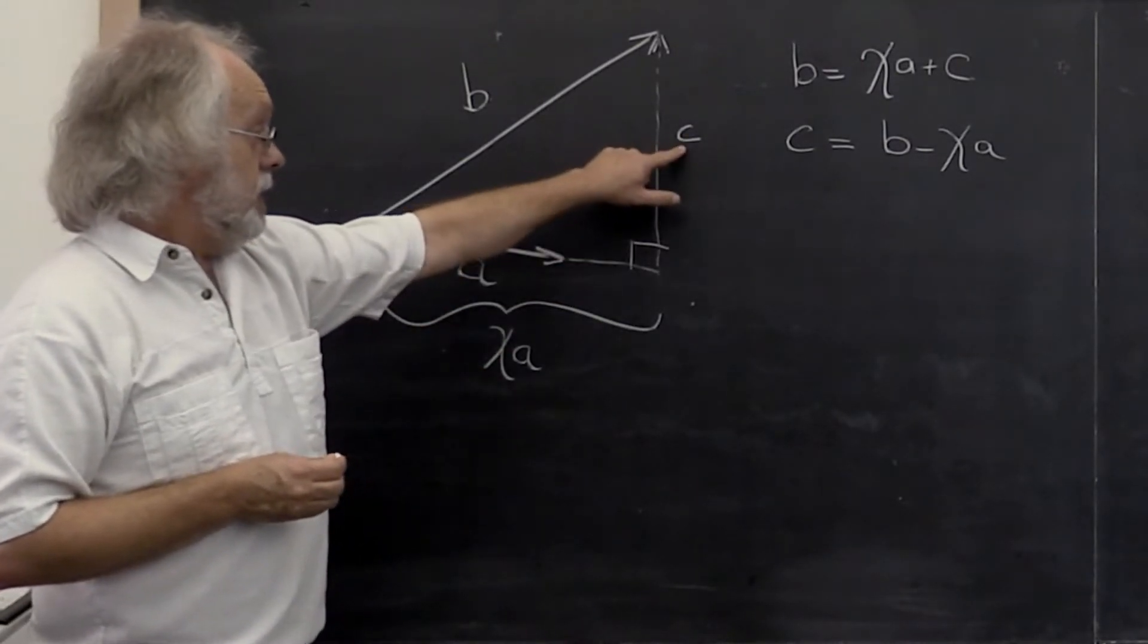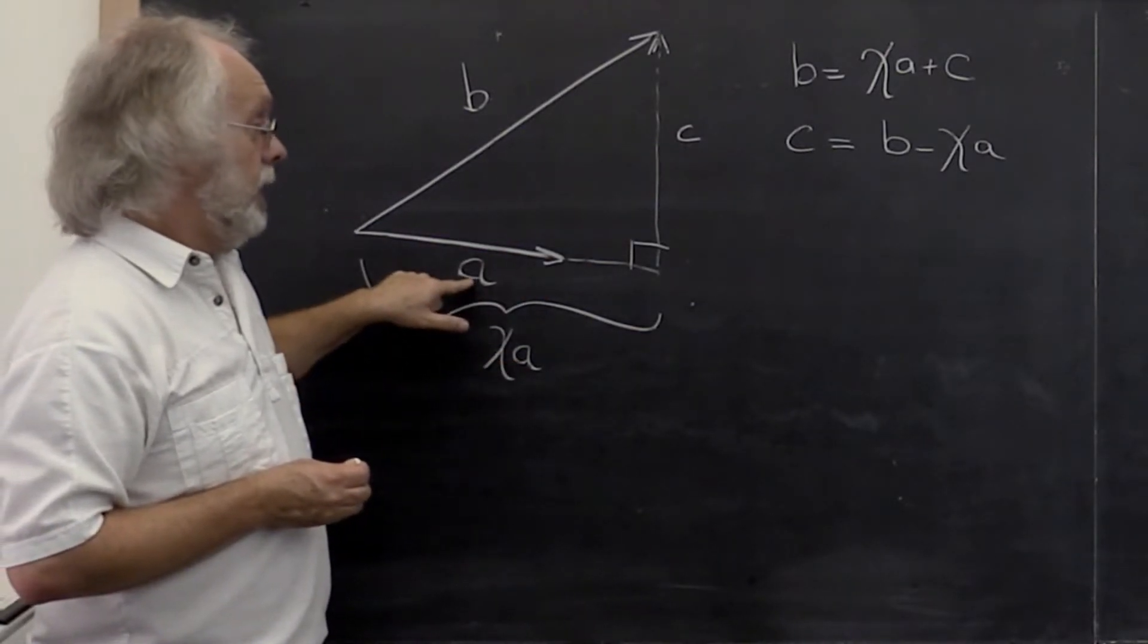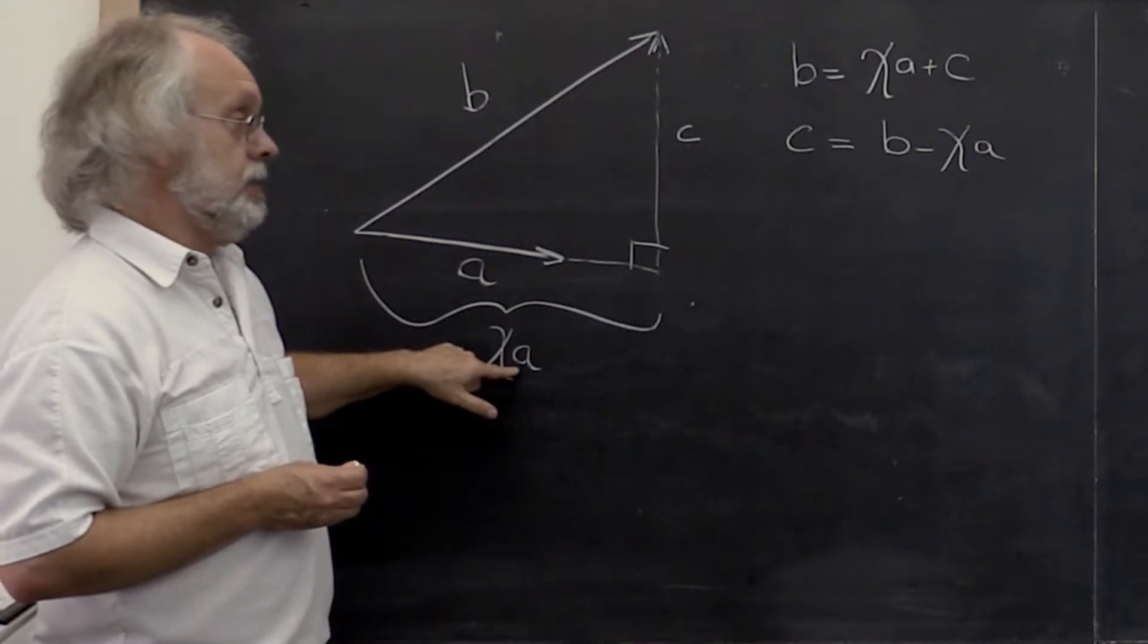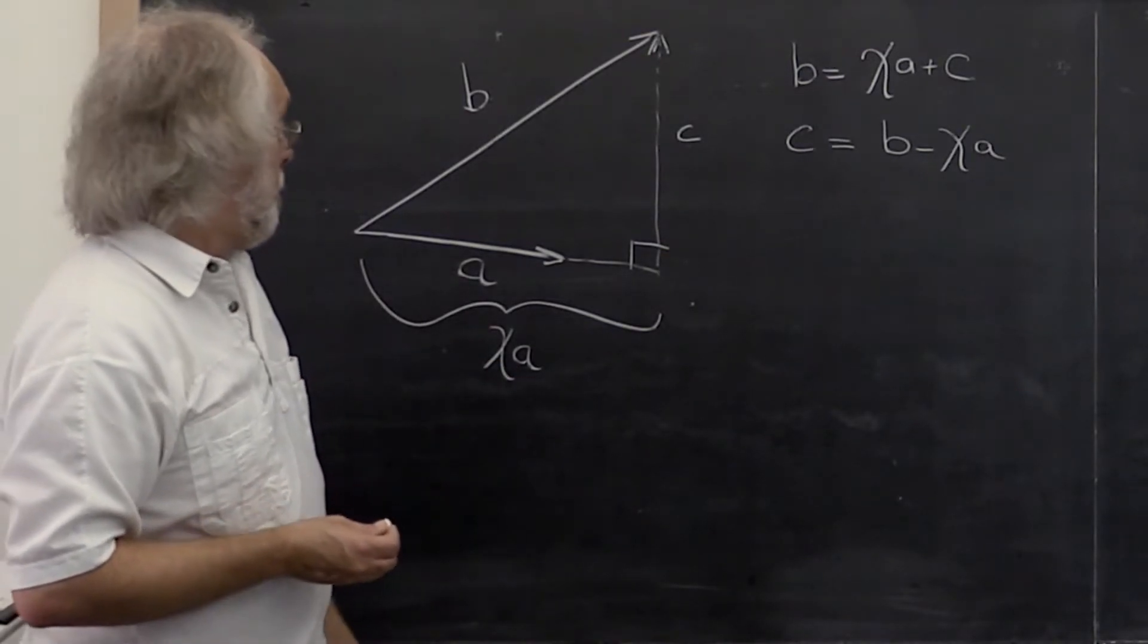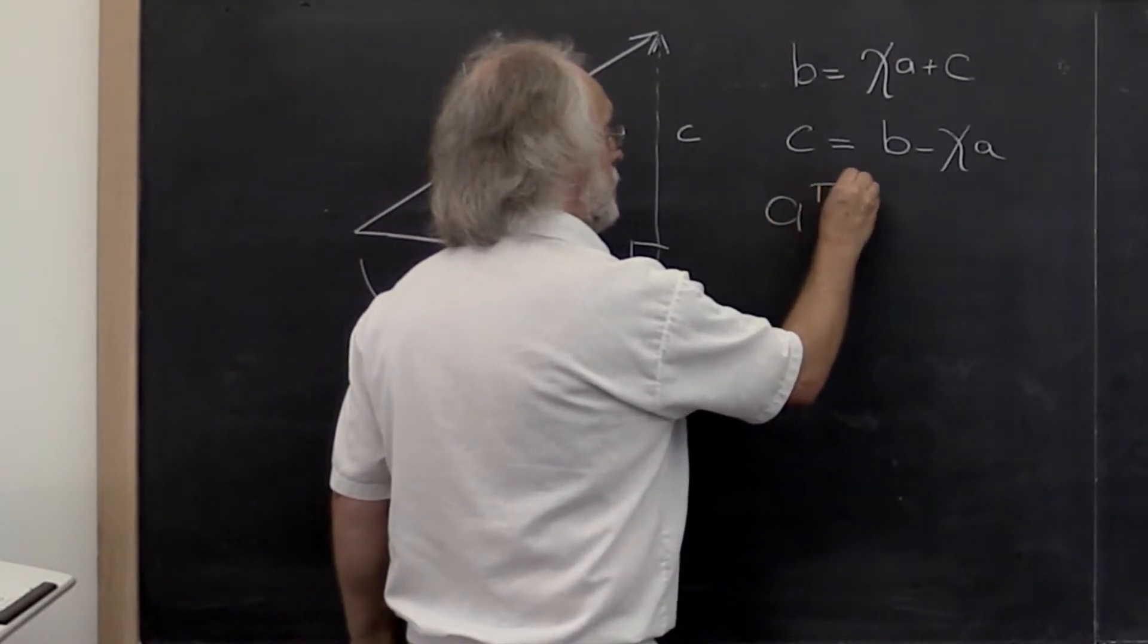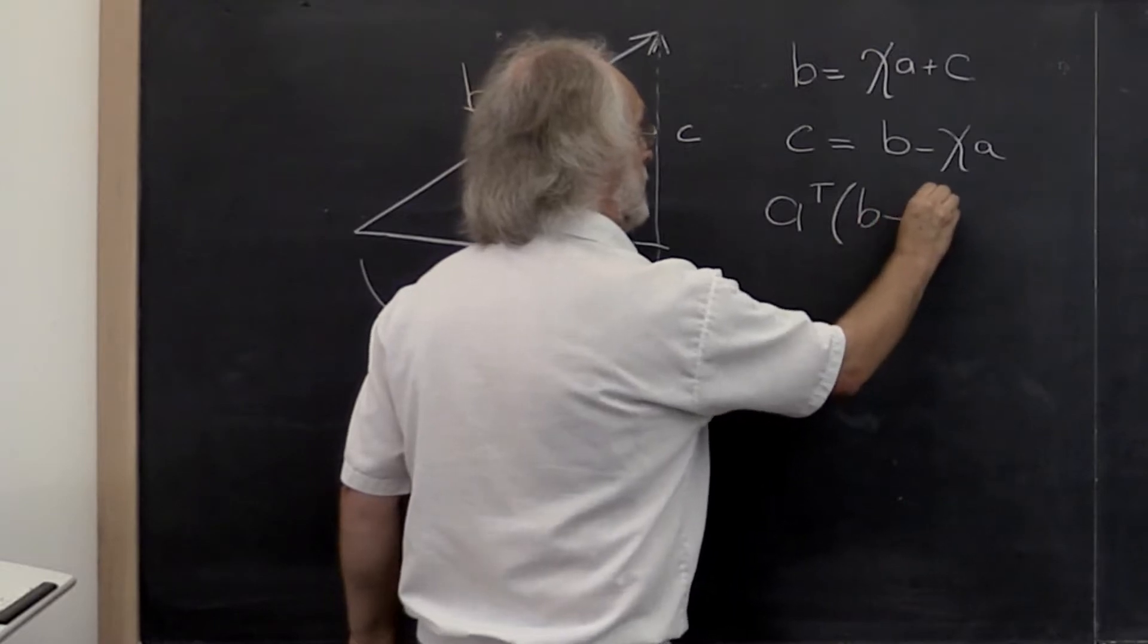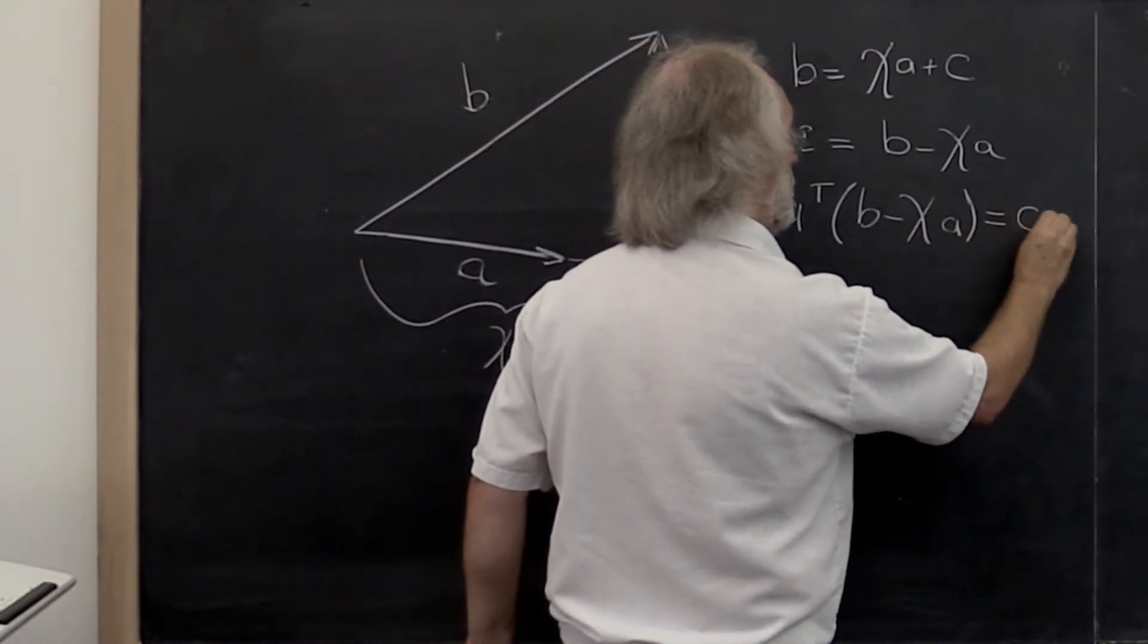We know that C is orthogonal to A and therefore to chi times A. So we can then look at A transpose times B minus chi times A, and we know that that's equal to zero.